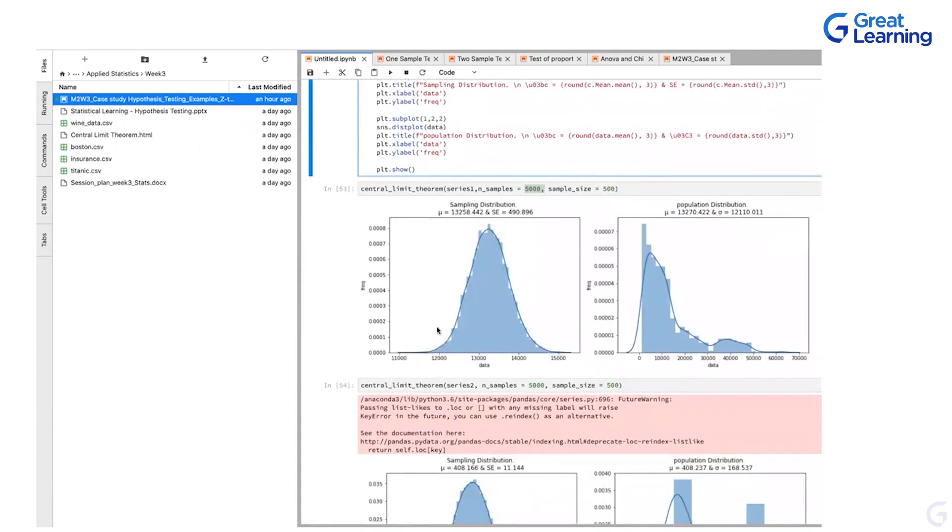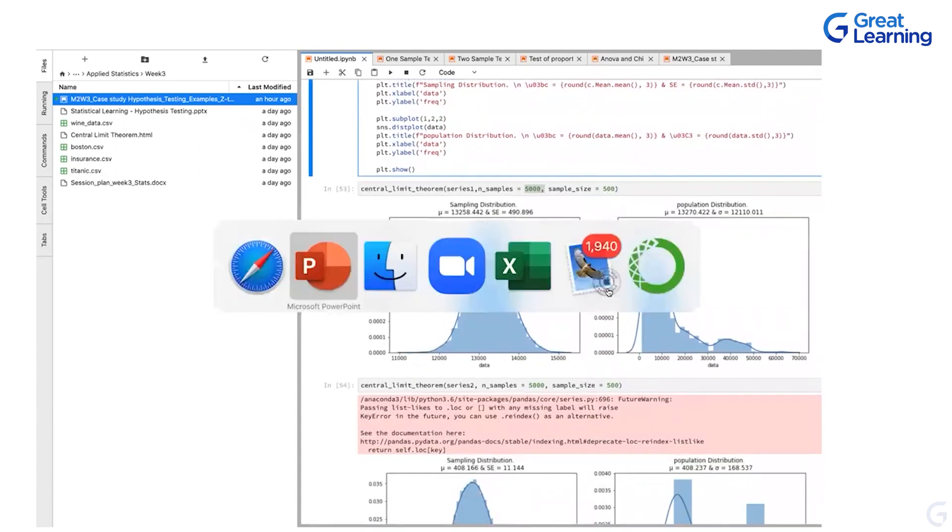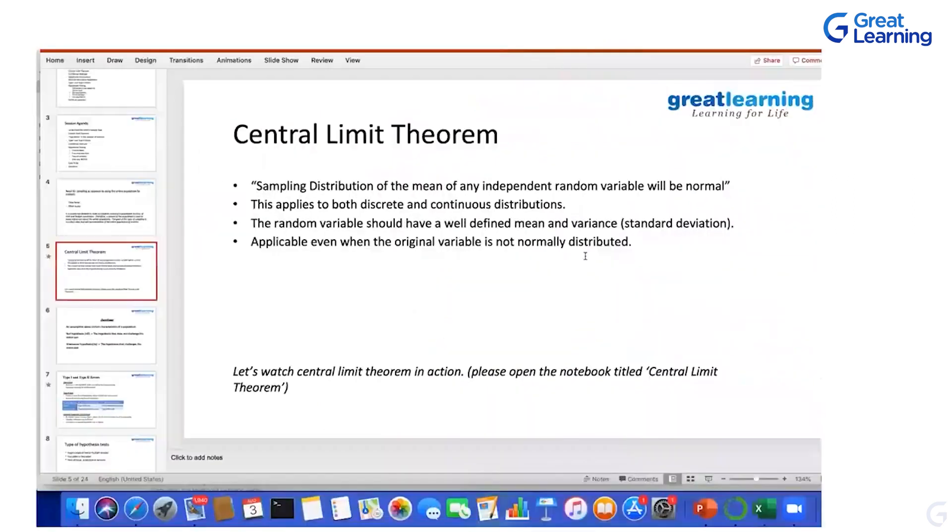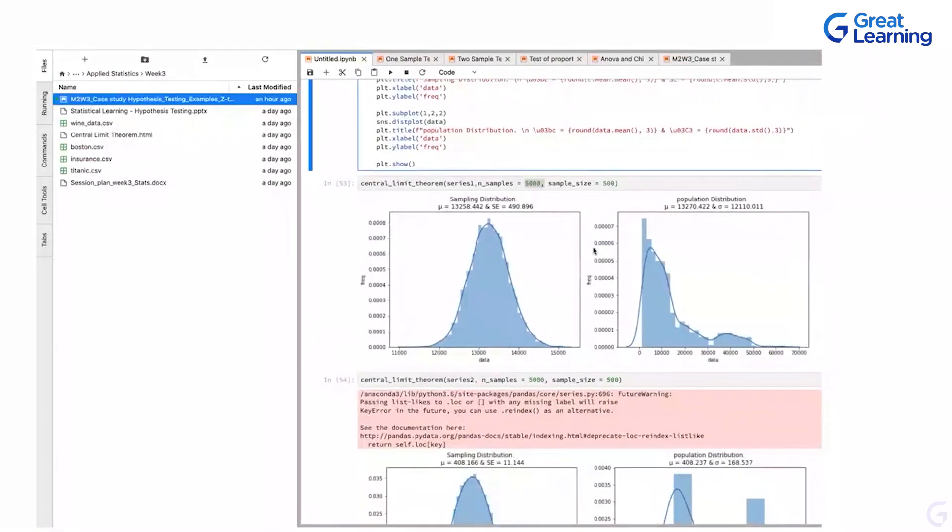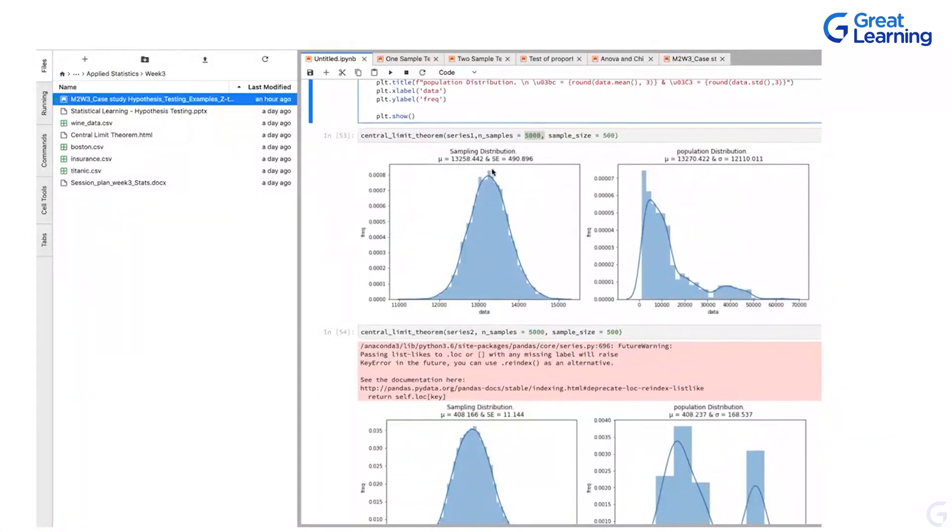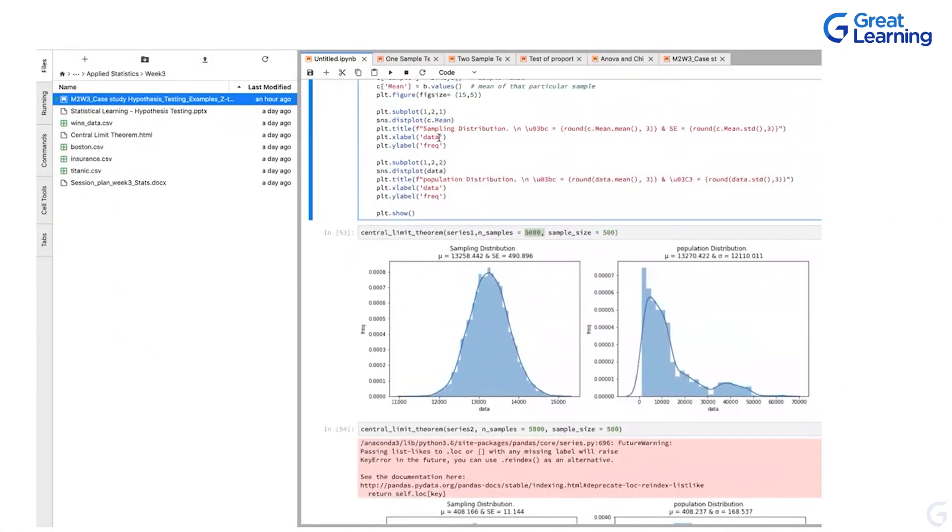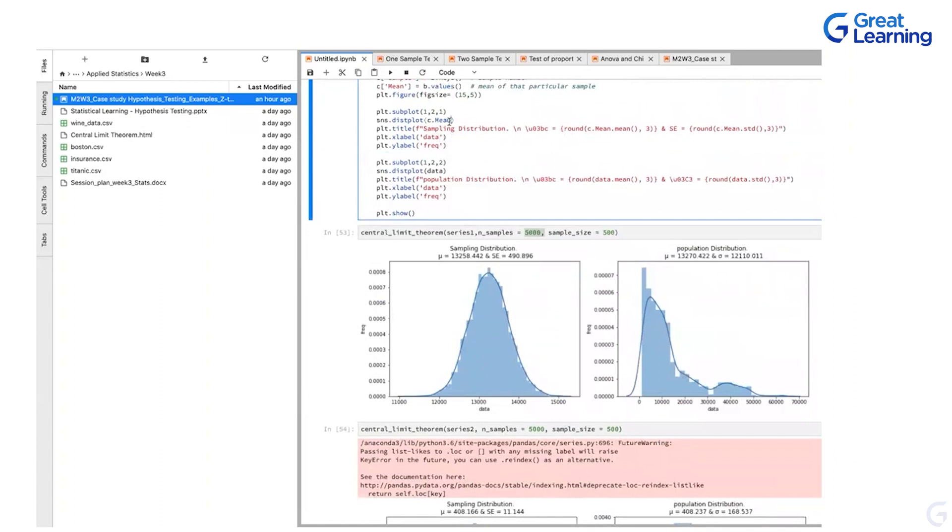So now this is all about, if I go back to the PPT that we have, it is proving this line. This is what central limit theorem critically important for us - sampling distribution of the mean of any independent random variable will be normal, though the original variable is not normally distributed. Just to prove this, we are doing this exercise. So this is the sampling distribution of the means that we calculated. The first one is about the means we are doing, right? The mean value.